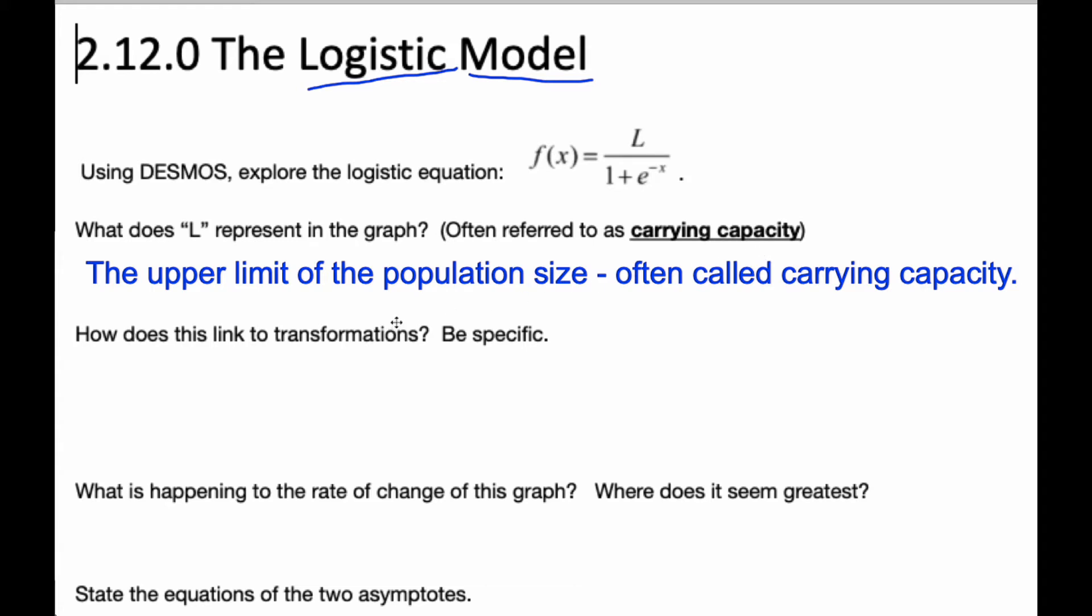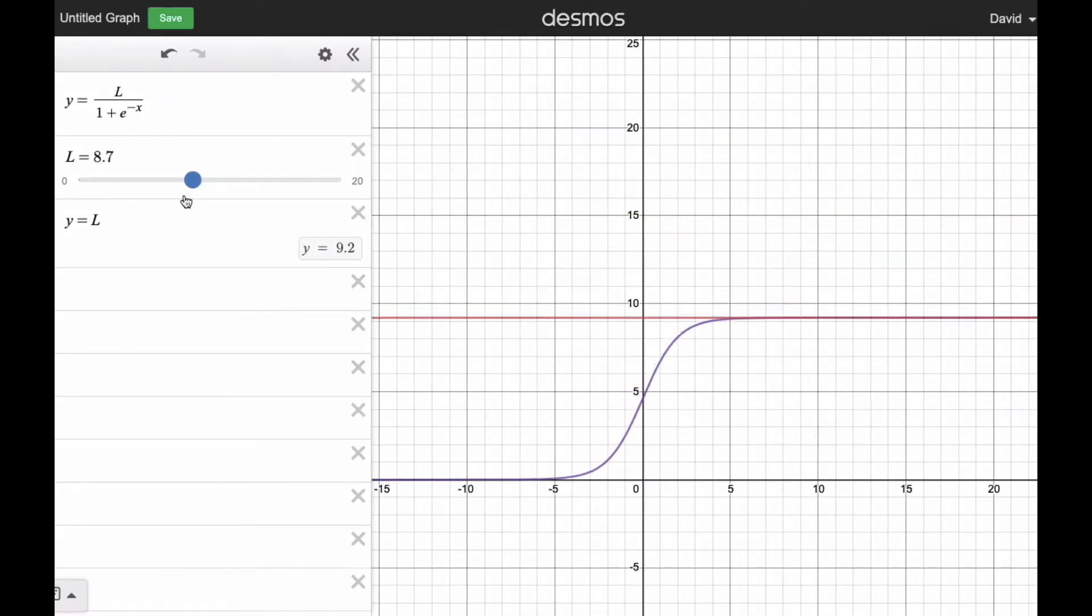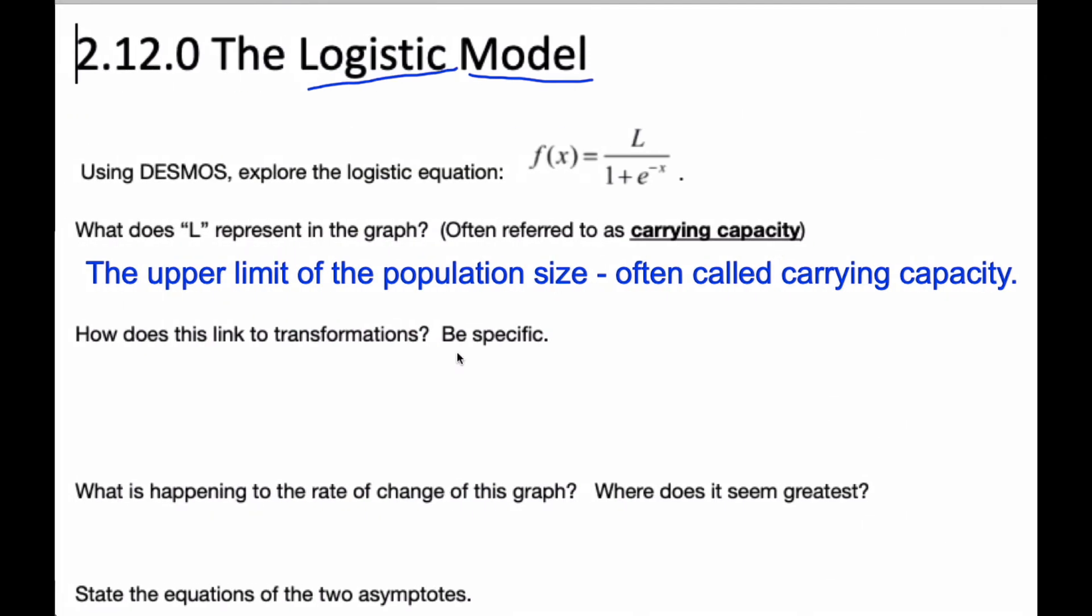Now, if I think about transformations, if I think about what's happening as I move L back and forth, all these y values are getting taller. And if I think about taking this particular function, 1 over 1 plus e to the negative x, if I multiply it by L, this is what this function actually is. And so L is a vertical stretch. All of the y values are being multiplied by L.